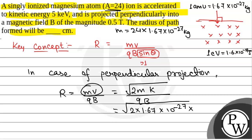So 5 kilo electron volt will be 5 into 10 to the power 3 electron volt, into 1.6 into 10 to the power minus 19 joules, divided by q into B.